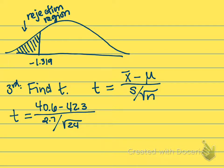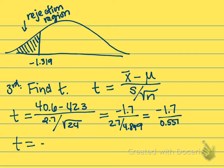Let's calculate the math. Up on top, we'll get negative 1.7. In our denominator, we'll have 2.7 divided by 4.899. And so then we'll have negative 1.7 divided by 0.551. And so my t here is negative 3.085.